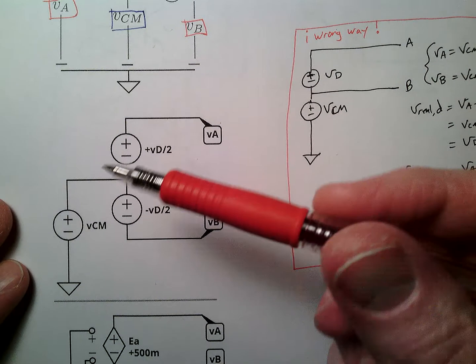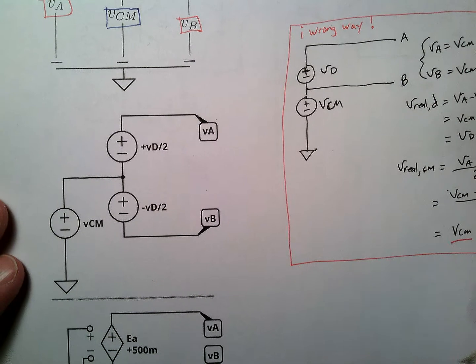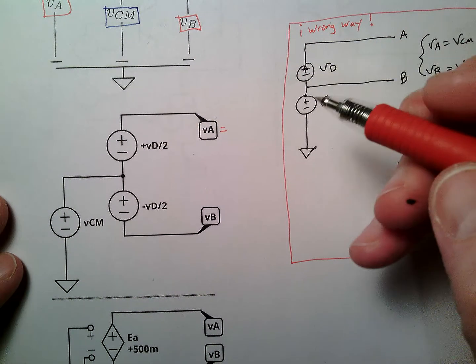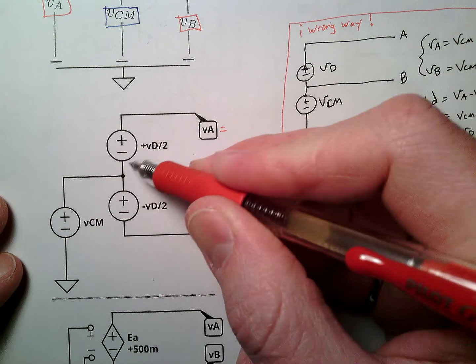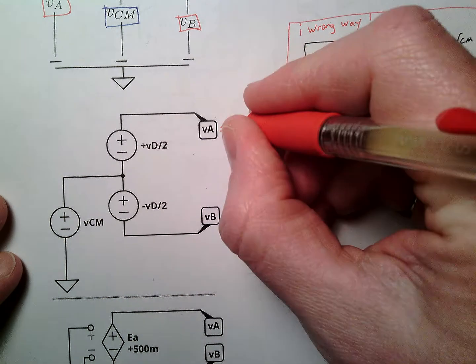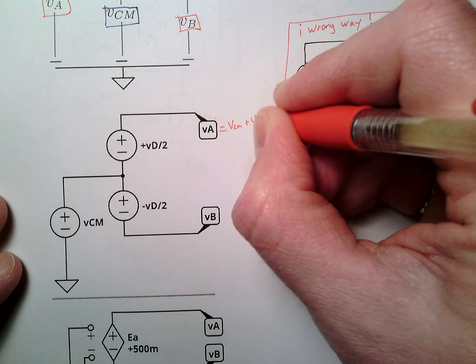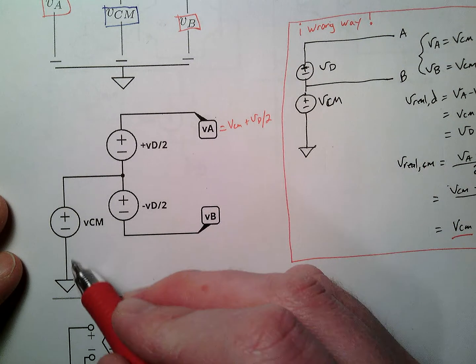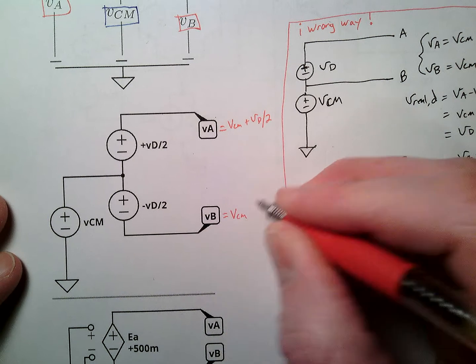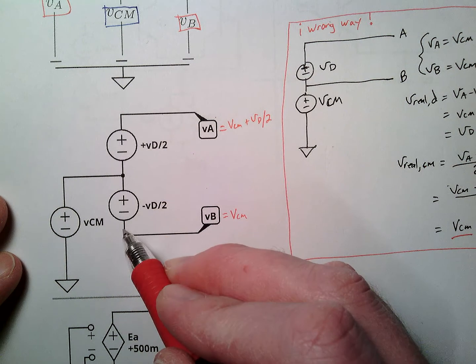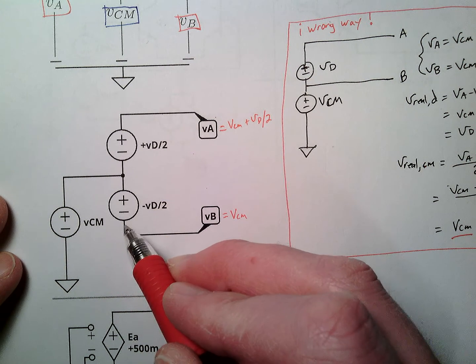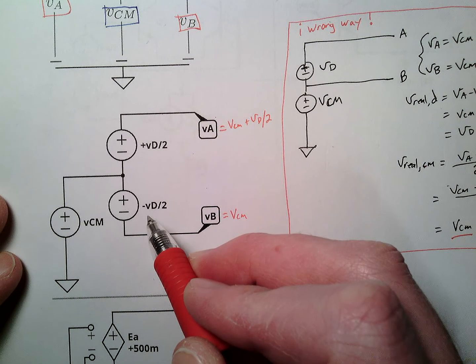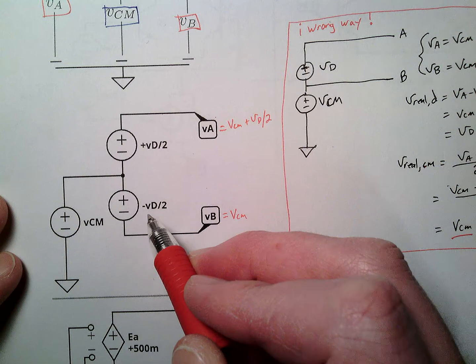Now we can go back to this circuit right here. Let's do a VA, do KVL here, we do VCM plus VD over 2. This one is VB. We go up by VCM, and we're going to go down by minus VD over 2, and I did this wrong.